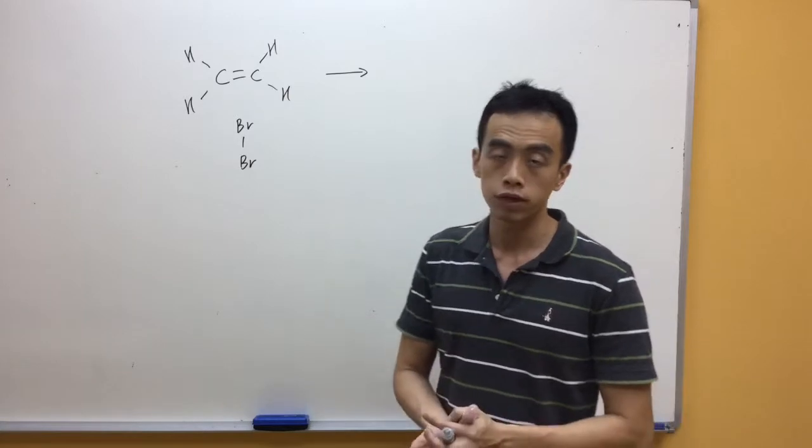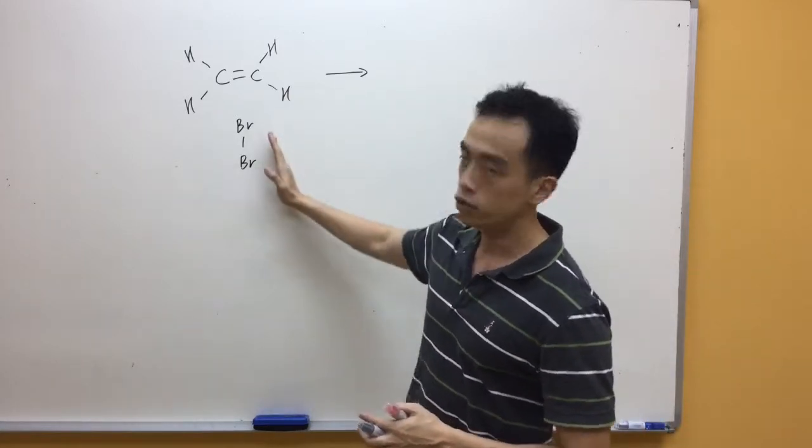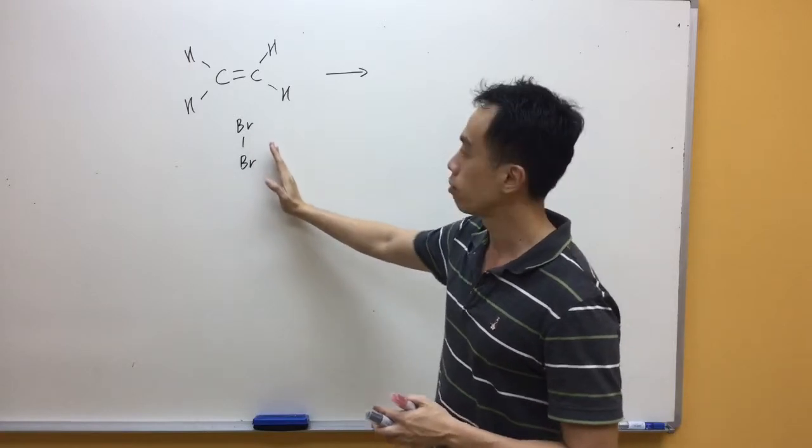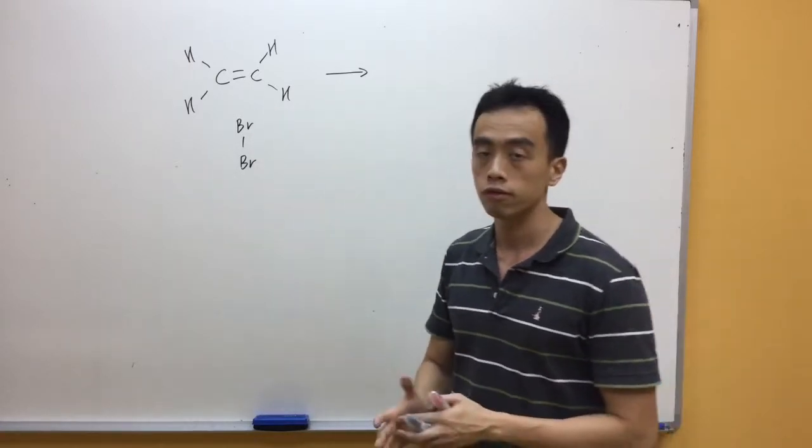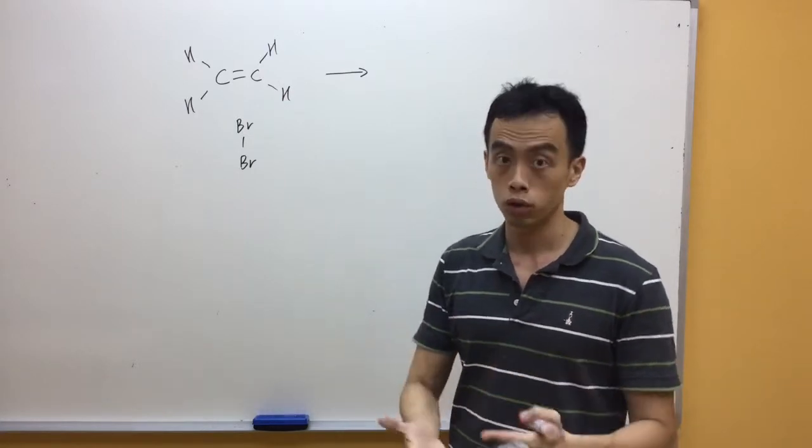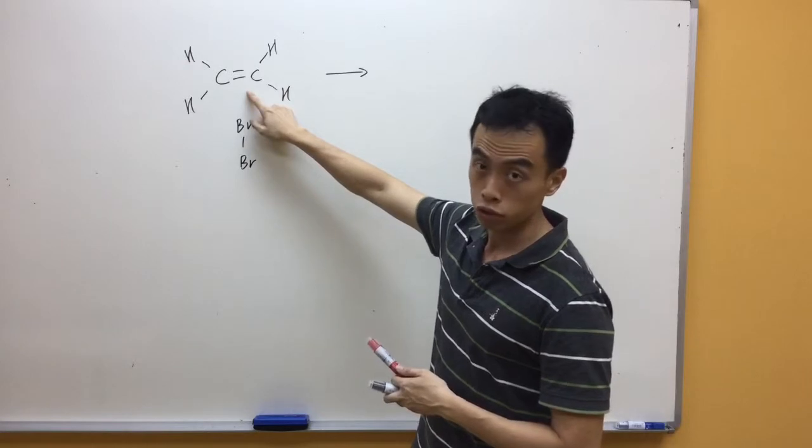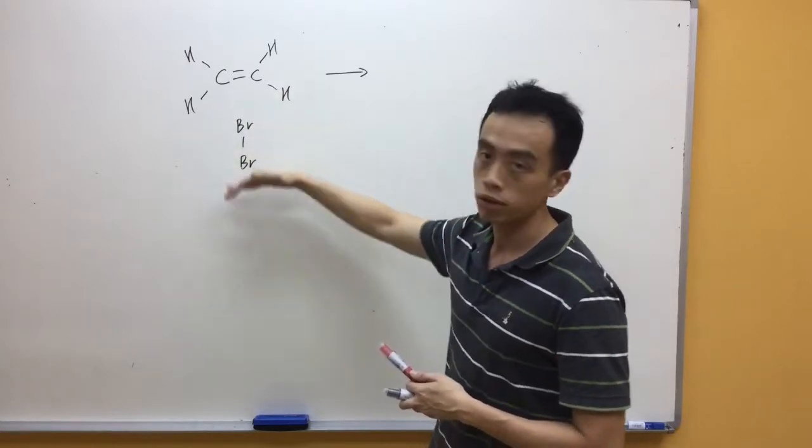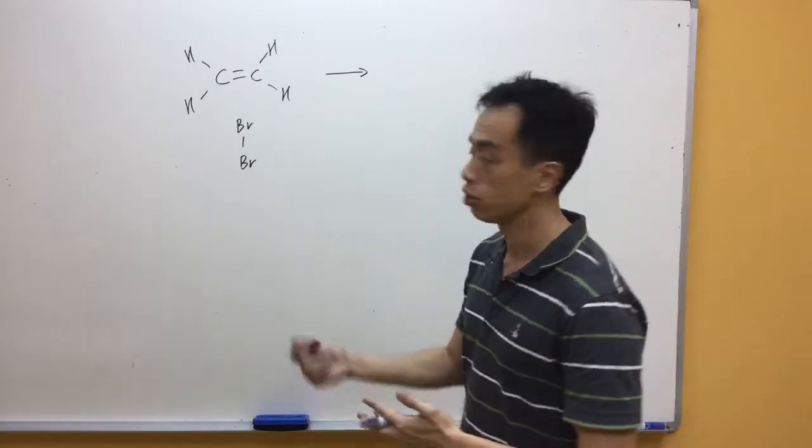The first step of electrophilic addition involves the approach of my bromine perpendicular to my alkynes. When my bromine approaches in this way, what happens is there will be a distortion of my electron cloud of my bromine molecule. Because my alkyne is electron-rich, you push the electron cloud away from my bromine and distort the electron cloud from the bromine molecule.